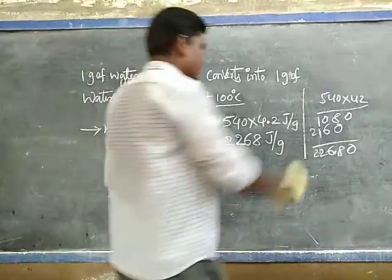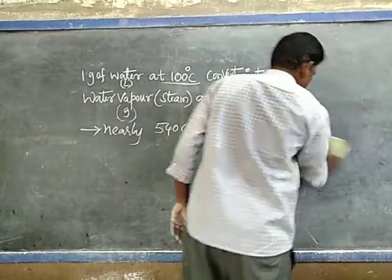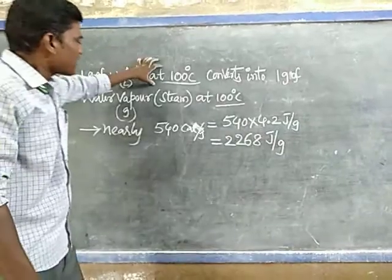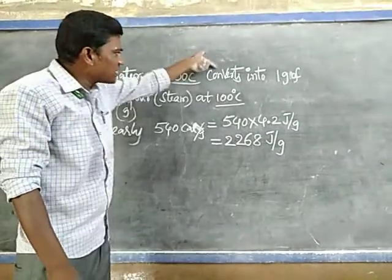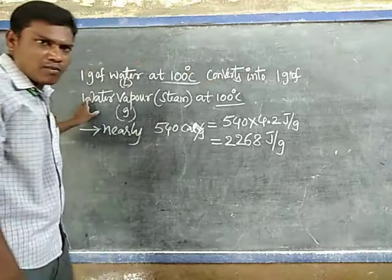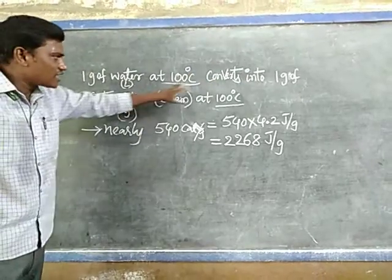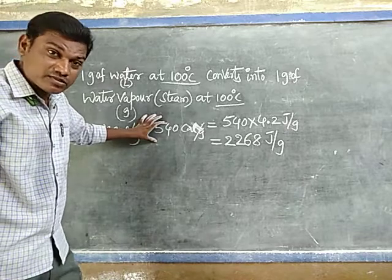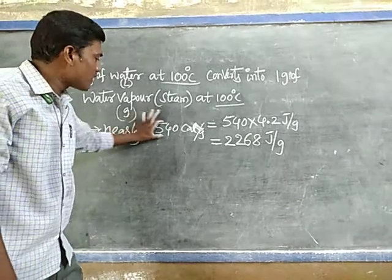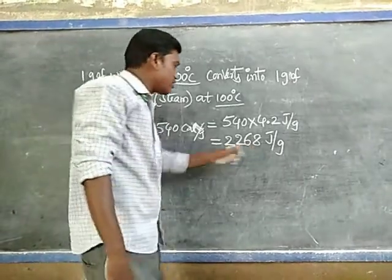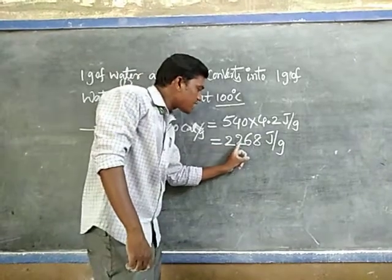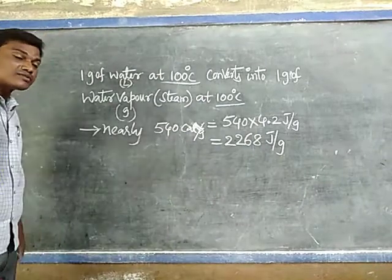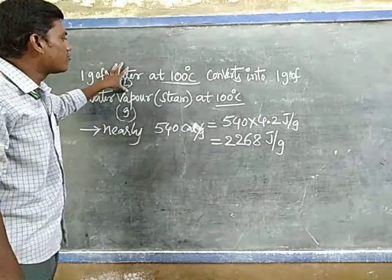Listen very carefully. One gram of water at 100 degrees Celsius is completely converted into one gram of water vapor or steam at 100 degrees Celsius. The energy absorbed in CGS units is 540 calories, and in SI units it is 2268 joules — that energy is absorbed by only one gram of water, converting from liquid phase to gaseous phase at 100 degrees Celsius.